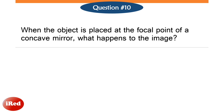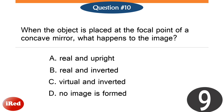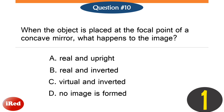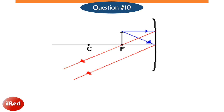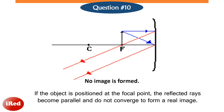Number ten: when the object is placed at the focal point of a concave mirror, what happens to the image? The answer is letter D: no image is formed. If the object is positioned at the focal point, no image is formed. The reflected rays become parallel and do not converge to form a real image.